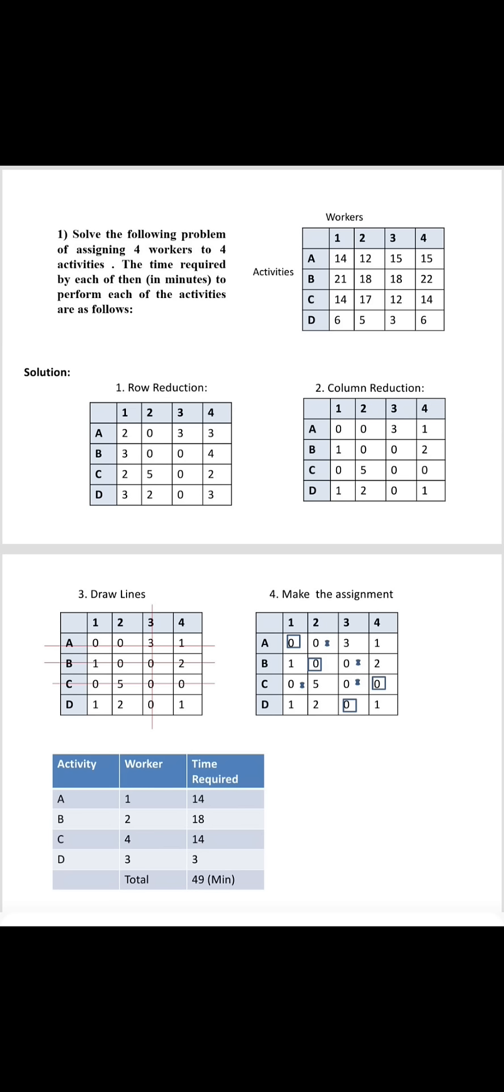So here the matrix is given in the question, which shows that there are 4 activities A, B, C and D. And 4 workers are there, 1, 2, 3 and 4.